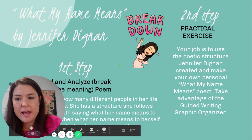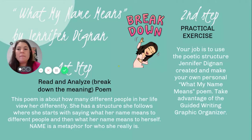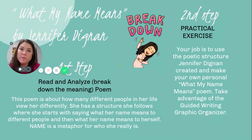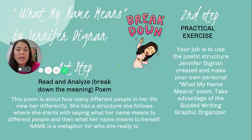Here's a breakdown of all of that. First step, you're going to read and analyze the poem. Analyze means to break down. The poem is about how many different people in her life view her differently. She has a structure where she says what her name means to different people, and then what her name means to herself. The name essentially isn't like a dictionary definition — it means more of, when your name is said, what do people think about? What is that metaphor of who you are as your name? Your second step is to use the poetic structure that the original poet gave and write your own poem. I've got a graphic organizer that will really help you break down exactly how to do that.